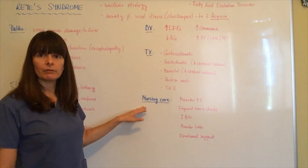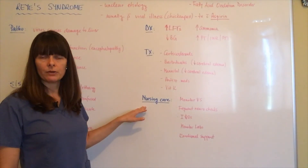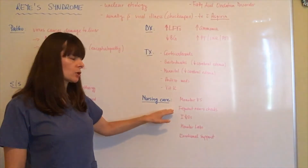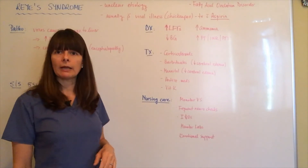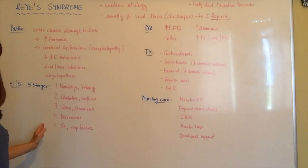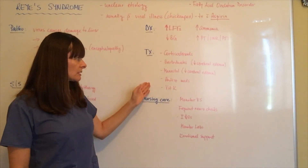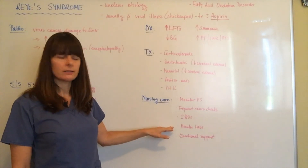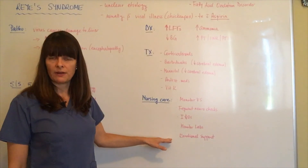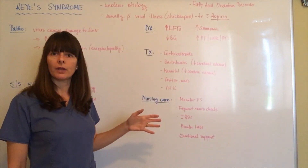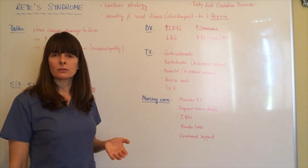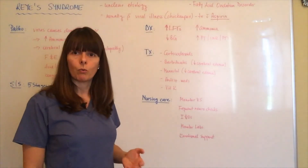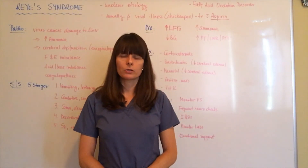Nursing care in the treatment of a patient with Reye's syndrome will be supportive, including administration of all these medications. We'll certainly have to monitor vital signs as well as the patient's neurologic status very frequently to determine any cascading signs and symptoms. Frequent I&Os because of all these medications and the administration of hypertonic solutions, as well as monitoring labs to check electrolytes. Emotional support for the patient and family is essential, because this is a child who just had the flu and is now seriously ill in the hospital with this very rare disorder. We'll need to provide emotional support to the family and educate them as to why this happened and what the treatment will be.